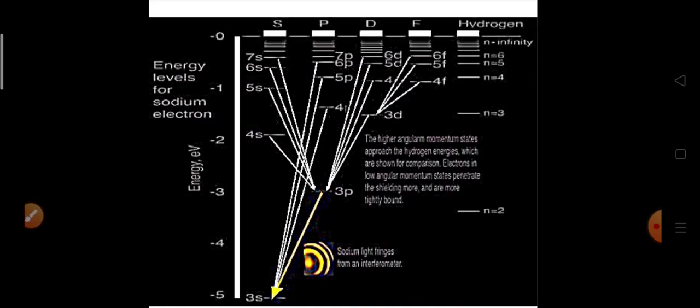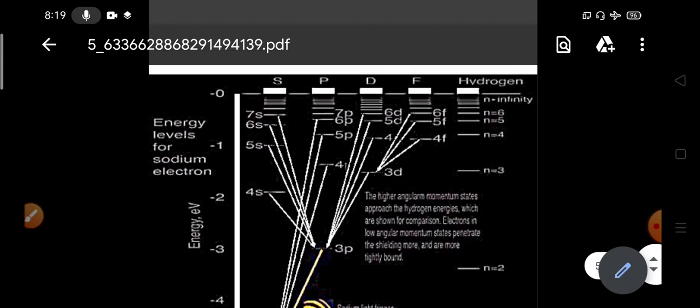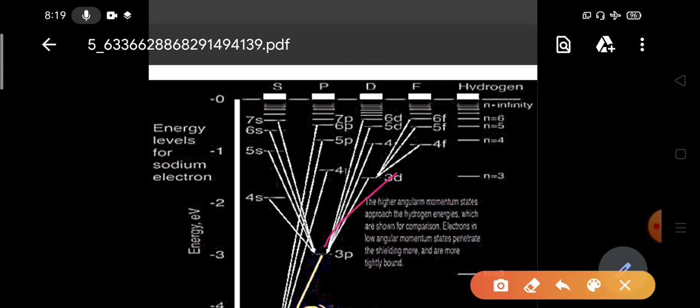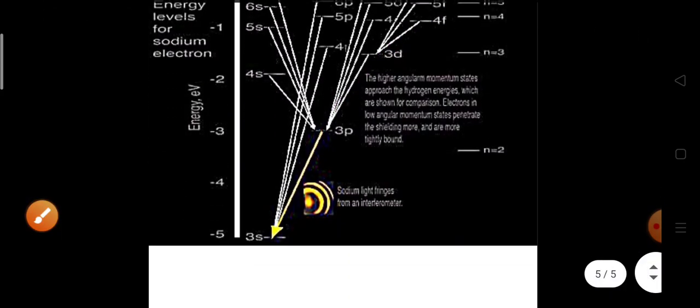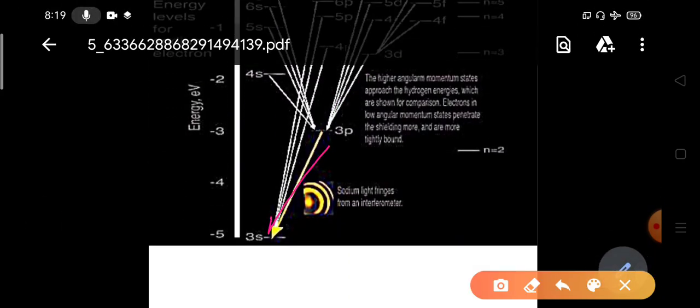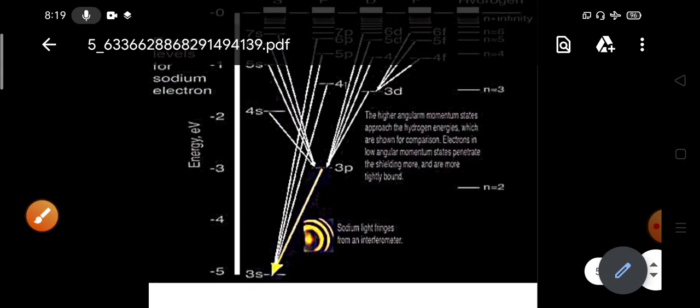In case of sodium spectra, the 3P to 3S, we see the D lines, that is yellow line. This is the spectrum of the sodium energy levels.